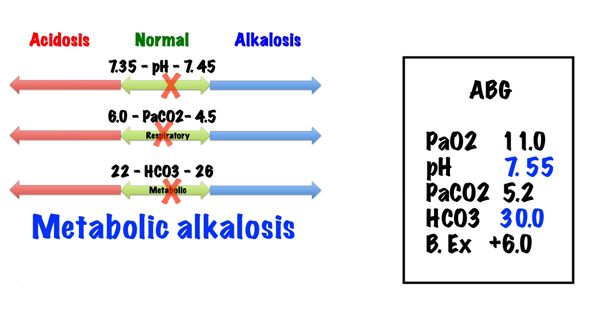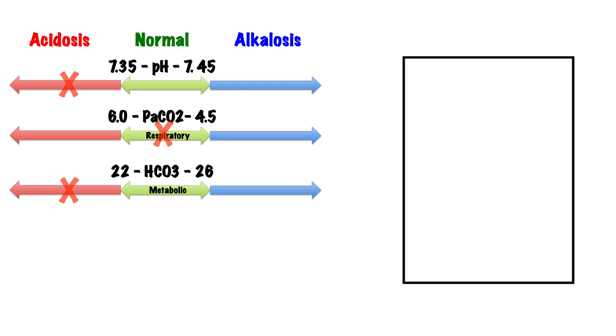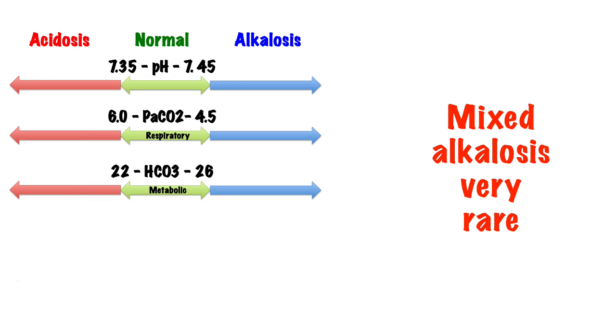If the bicarbonate rises above 26, it will cause an alkalosis. If it falls below 22, it will cause an acidosis. Acidotic patients are far more common than alkalotic ones. If the partial pressure of carbon dioxide rises and the bicarbonate falls, then this will cause a mixed metabolic and respiratory acidosis. A mixed alkalosis would be exceptionally rare.